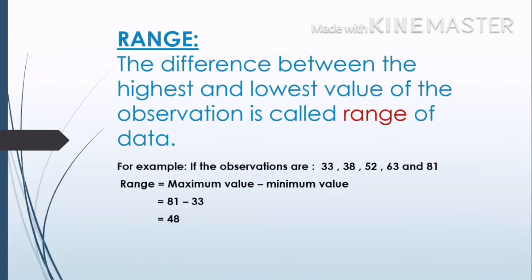Now students, what do you mean by range of data? You have also learned in class 7 that the difference between the highest and the lowest value of the observations is called range of data. For example, if the observations are 33, 38, 52, 63, and 81, then the range is maximum value minus minimum value, that is 81 minus 33, which is 48.